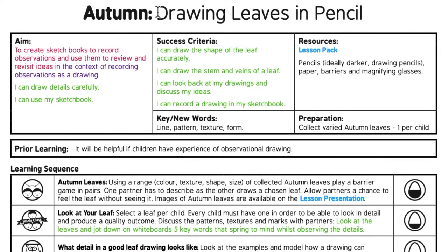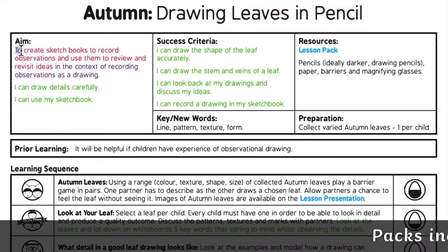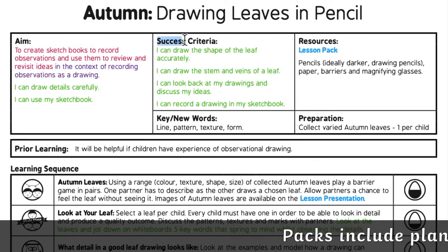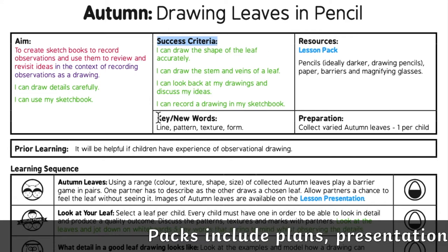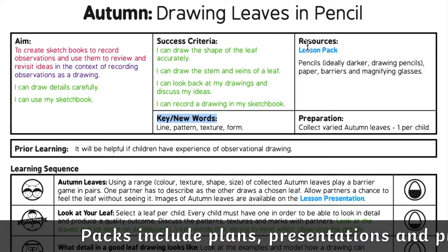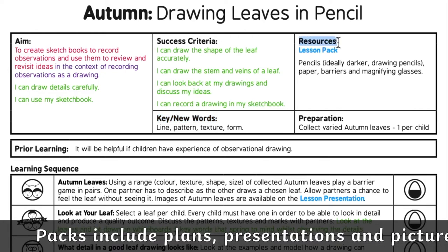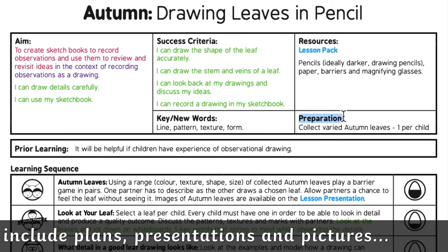In-depth lesson plans showing the skill. The aims, which would be the learning intention or objective in class. Success criteria — essentially what your child's work should include by the end of the lesson. I particularly like the key words to articulate the art we're learning about, and resources help keep on top of organisation to be fully prepared for the lesson.